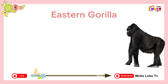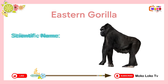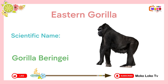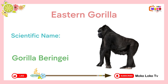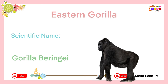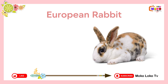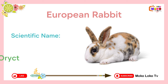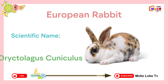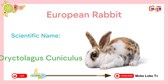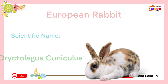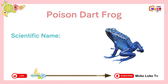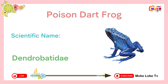Eastern gorilla. Scientific name: Gorilla beringi. European rabbit. Scientific name: Orectologus cuniculus. Poison dart frog. Scientific name: Dendrobatidae.